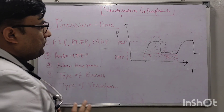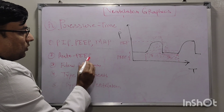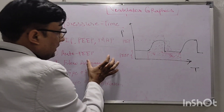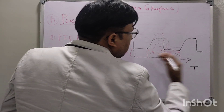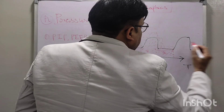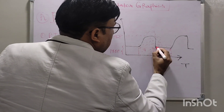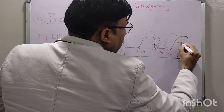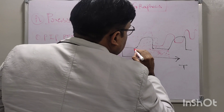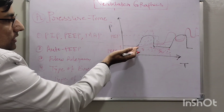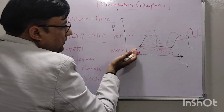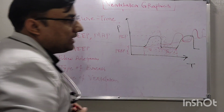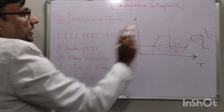We can also see auto-PEEP or air trapping in the pressure-time curve. In auto-PEEP, the PEEP level progressively increases with successive cycles — the graph starts from a higher baseline each cycle, going up and up. This indicates that auto-PEEP is generating and air trapping is happening, which we can detect in the pressure-time curve.